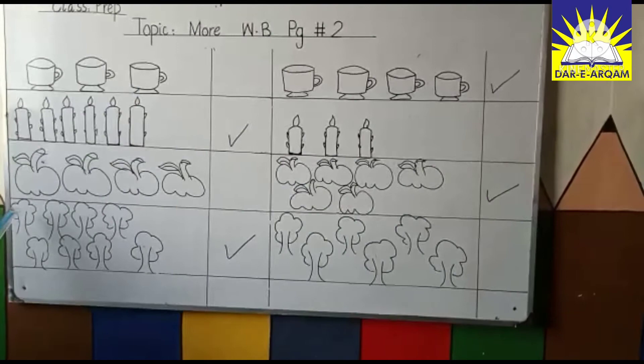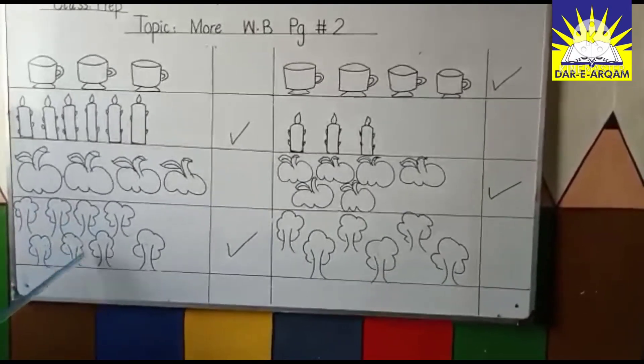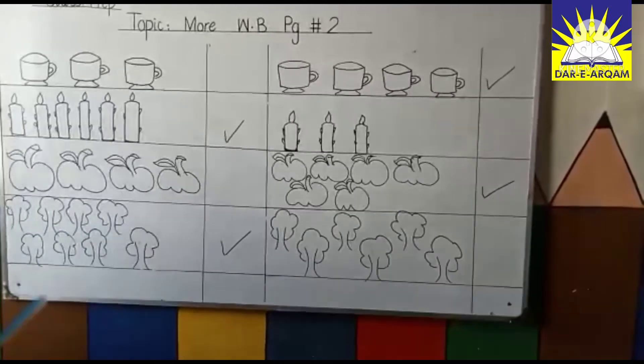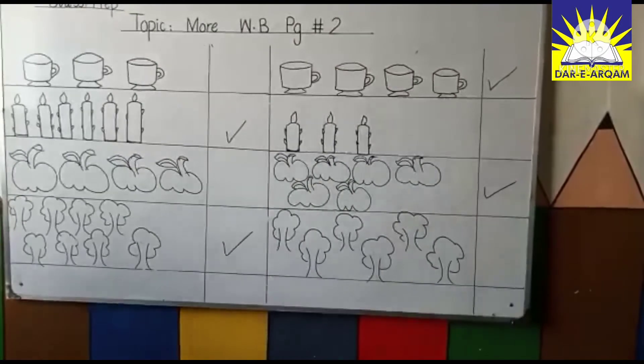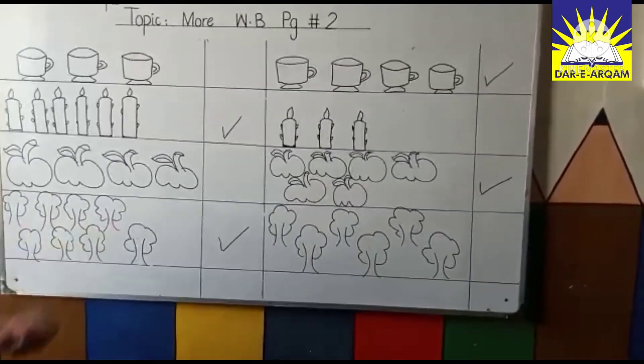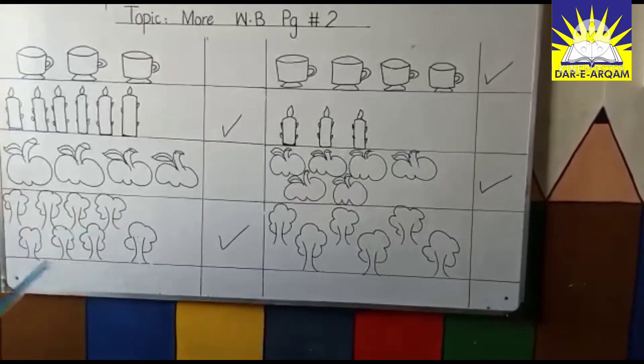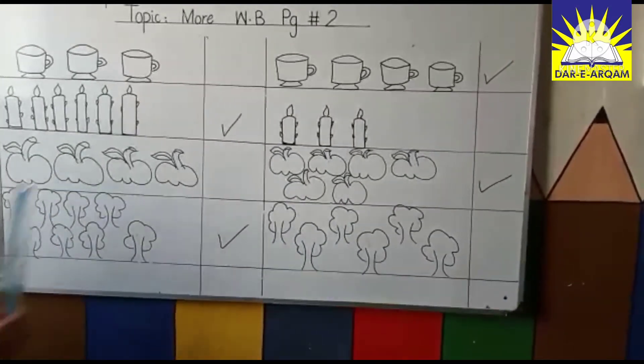Let's count the trees. One, two, three, four, five, six, seven, eight. And one, two, three, four, five, six. Kaun se trees zyada hain? Eight wali ya six wali? Toh eight wali ke trees zyada hain, is mein aapko tick lagana hai.